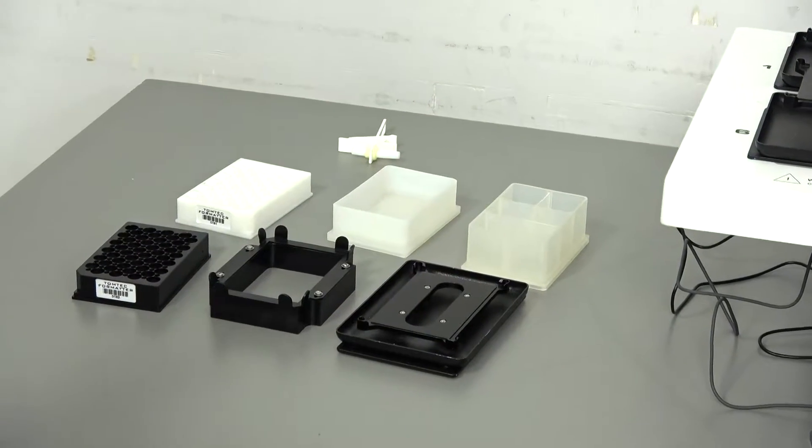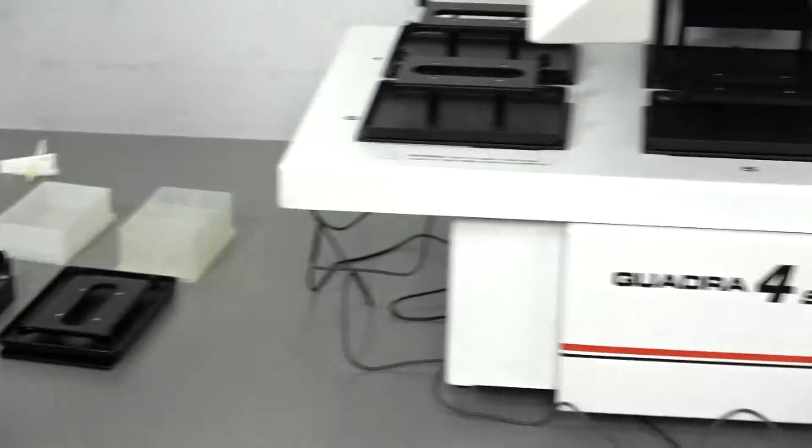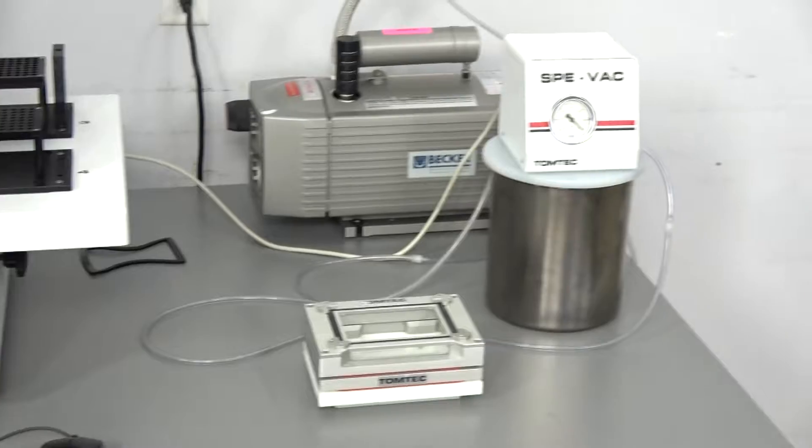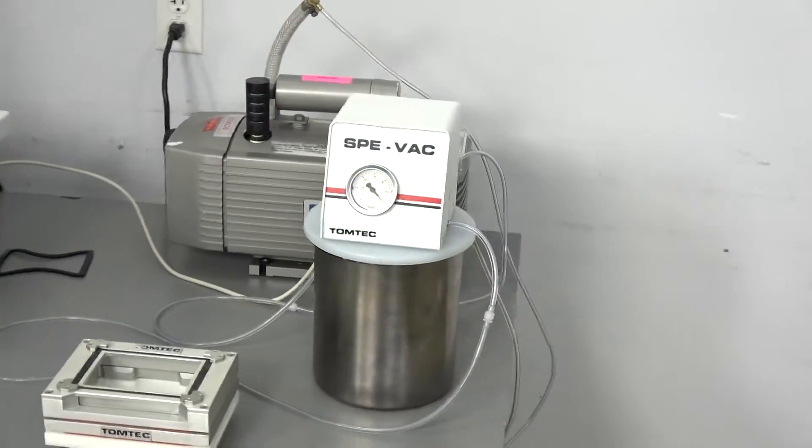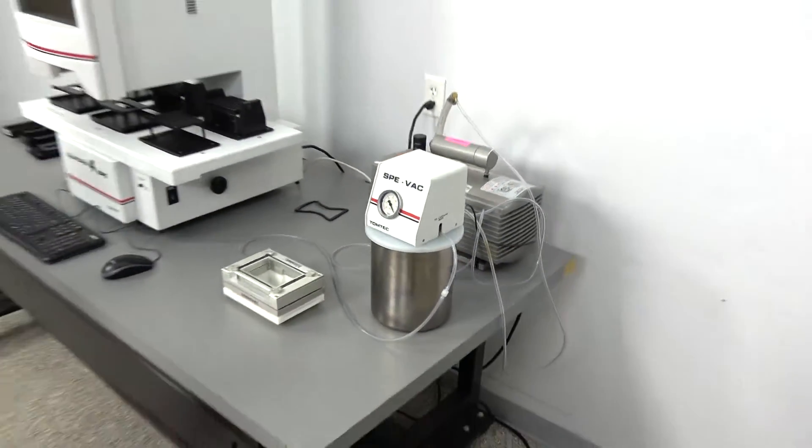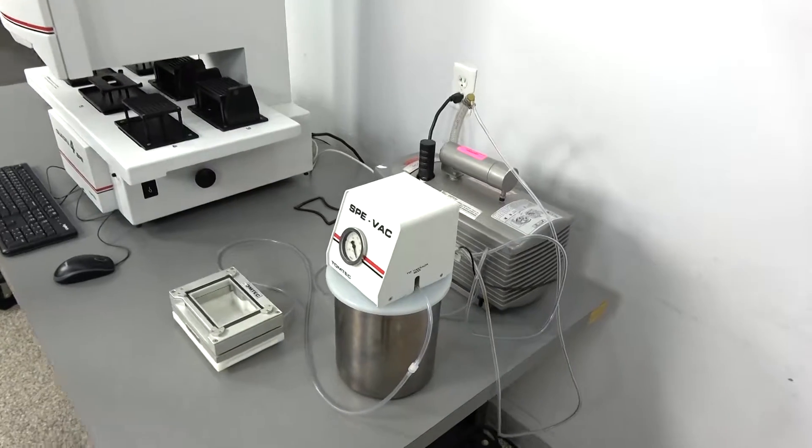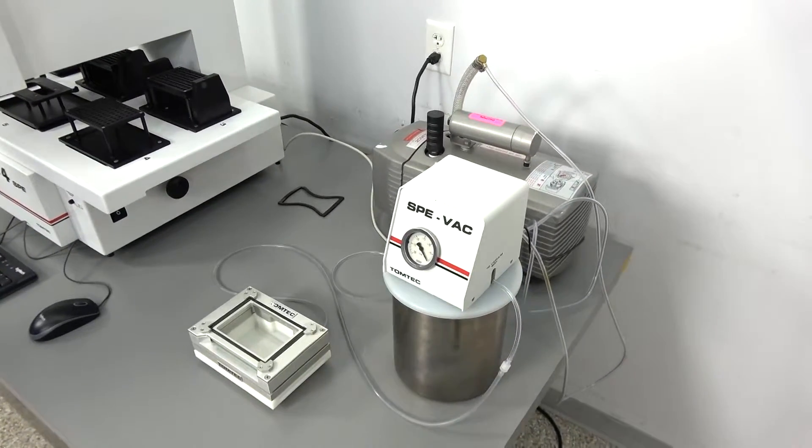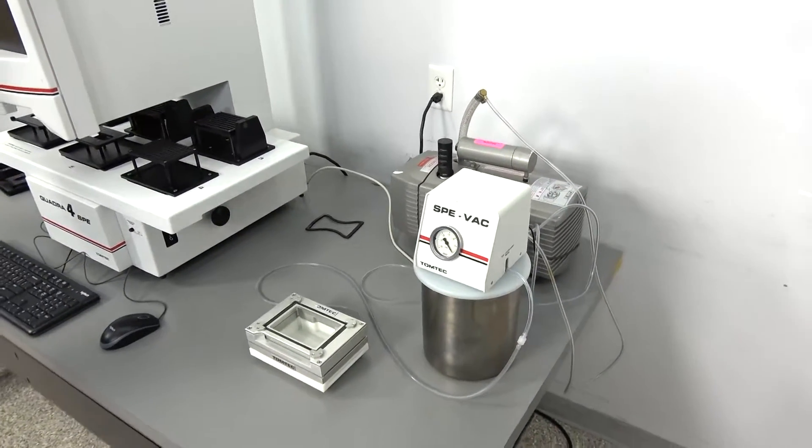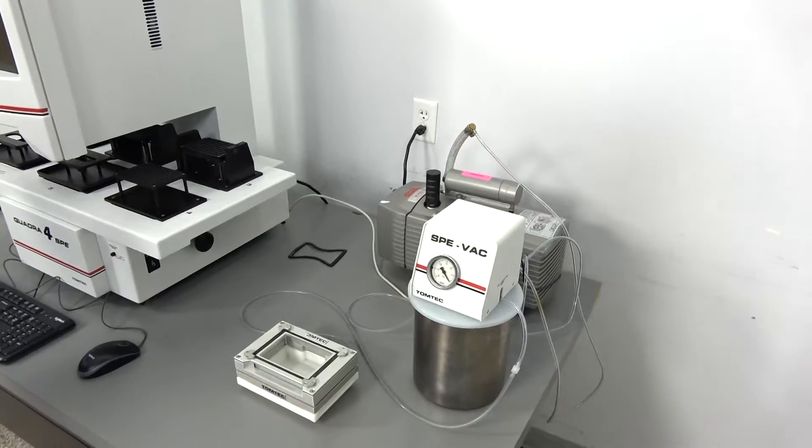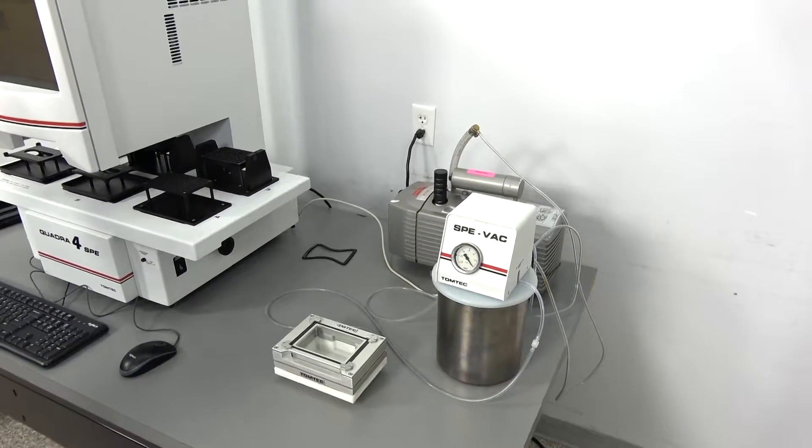One of the other things that we pair this system with is the TomTek VacuBox system. This one has an automatic vac system and monitor of the vacuum. It monitors the waste system to see if it's full so that you don't overflow the waste system.